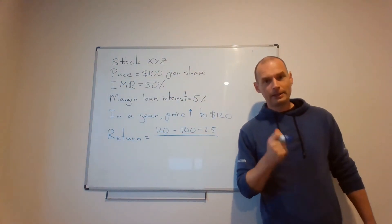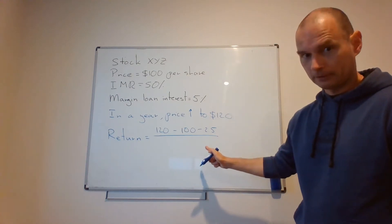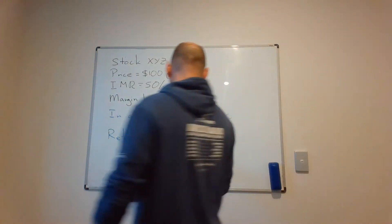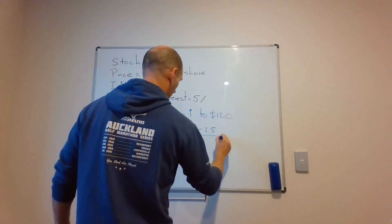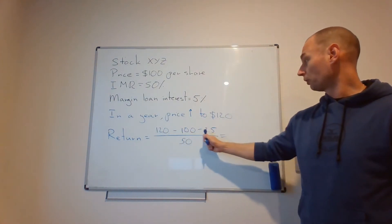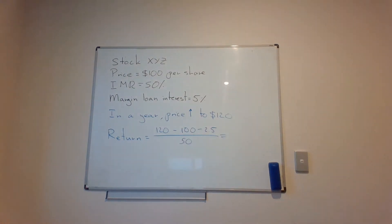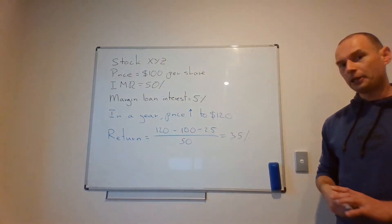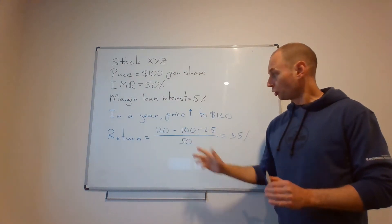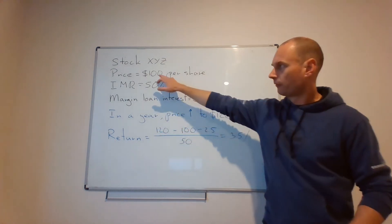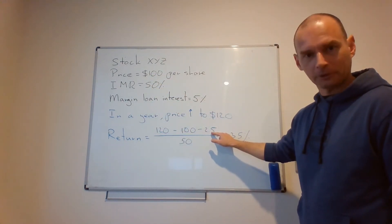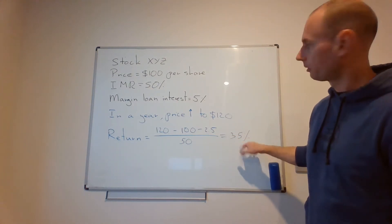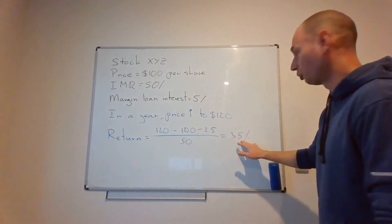In the denominator, I put the amount that I have invested, and that is not 100 bucks, that's 50 bucks. So we have 120 minus 100 minus two and a half, which is 17.5 divided by 50. So, 35%. Even though my returns should have doubled because I am investing only half of 100, they will not because of the margin interest. They have almost doubled, went from 20% for a cash purchase to 35%.